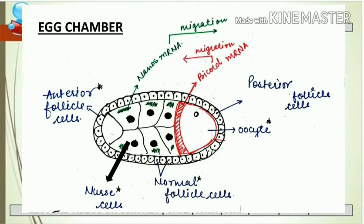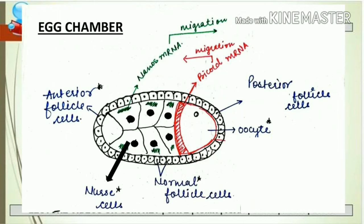The oocyte is located in the posterior region. The bicoid mRNA is mainly secreted from the nurse cell. Importantly, after mRNA synthesis, the bicoid mRNA migrates to the anterior portion and the nanos mRNA migrates to the posterior portion, and throughout the overall developmental process they remain in those positions — bicoid in the anterior and nanos in the posterior.